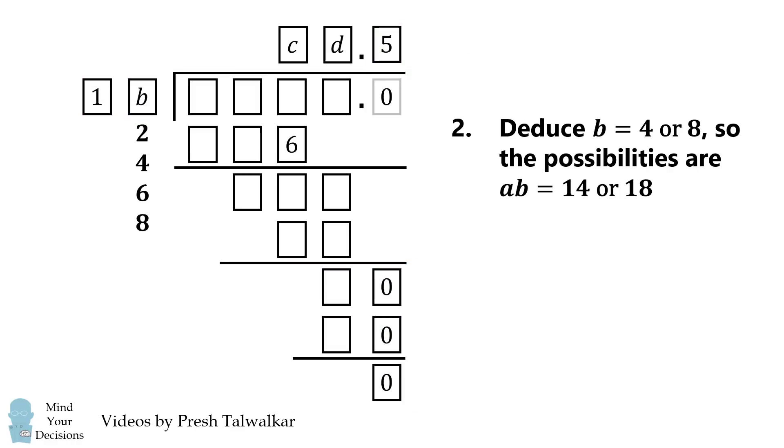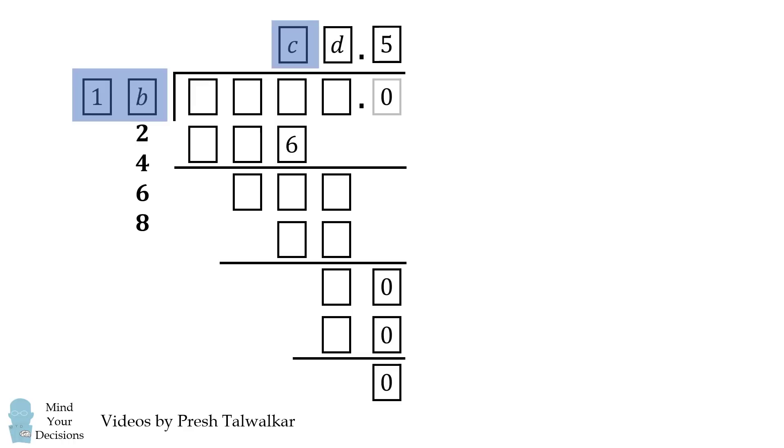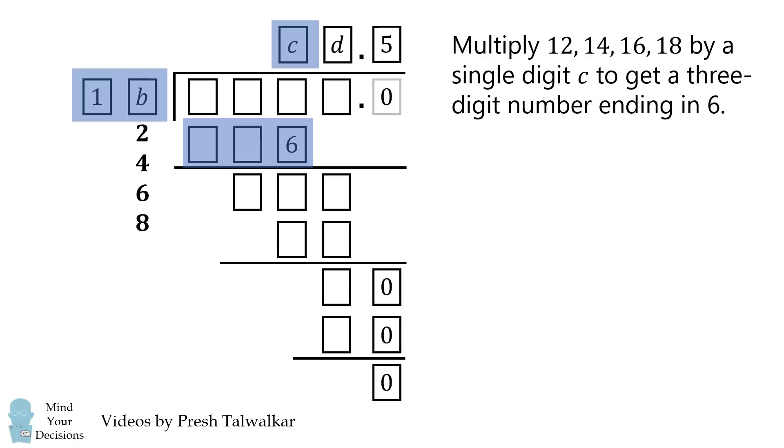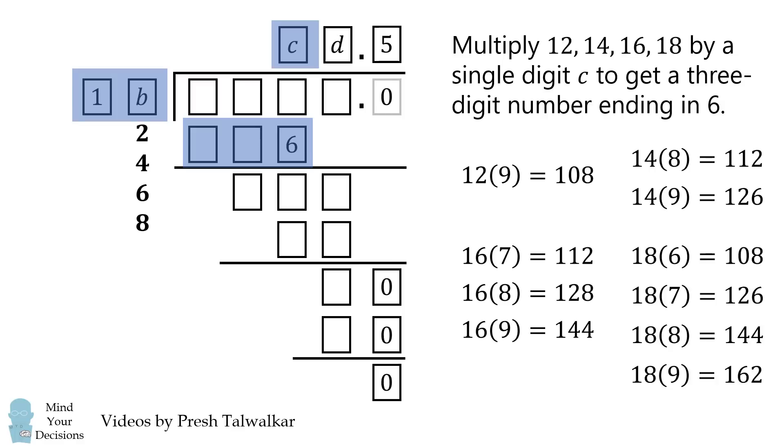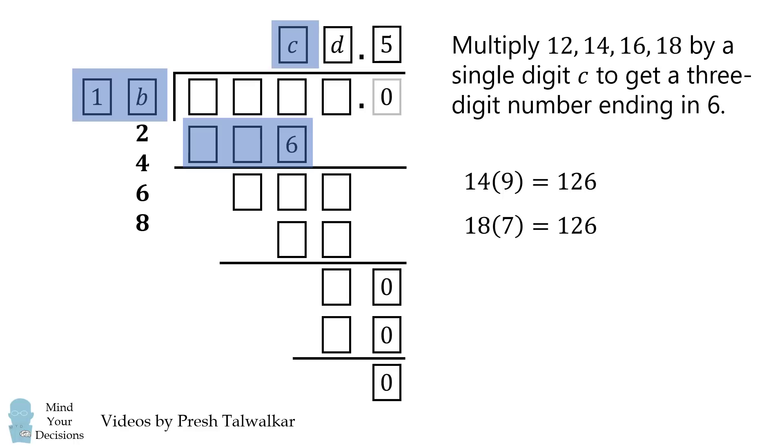We'll now proceed to the second step. We're going to show that B is either 4 or 8, so AB is either 14 or 18. To do that, we'll consider the first step. We have 1B multiplied by C equals a three-digit number ending in 6. So we're going to consider multiplying 12, 14, 16, and 18 by a single digit C to get a three-digit number ending in 6. We'll actually just work through these possibilities. There are not too many to consider. Of these three-digit numbers, there are only two possibilities that end in 6. It's either 14 by 9 or 18 by 7.